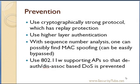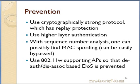One of the possible prevention techniques is to use cryptographically strong protocols like IEEE 802.11i with the CCMP protocol, which is cryptographically strong, so replay protection will not be affected even if MAC addresses are spoofed. You can also use higher-layer authentication so that simple ACL bypassing will not help much. With sequence number analysis, one can possibly detect MAC spoofing, but this can be easily bypassed because in wireless packets you can change the sequence number as well as the MAC address at will — so sequence number analysis is not a very strong detection or prevention technique.